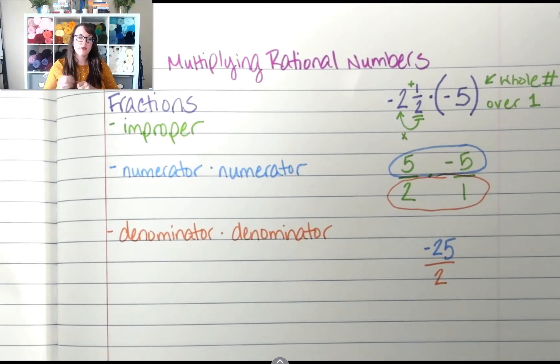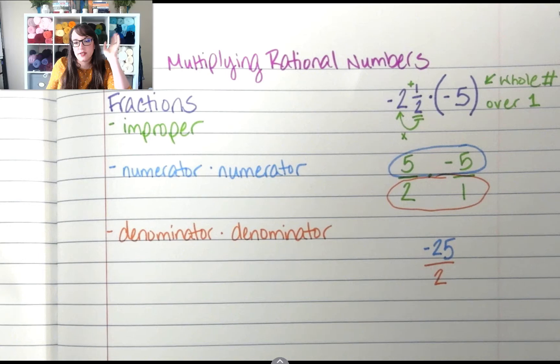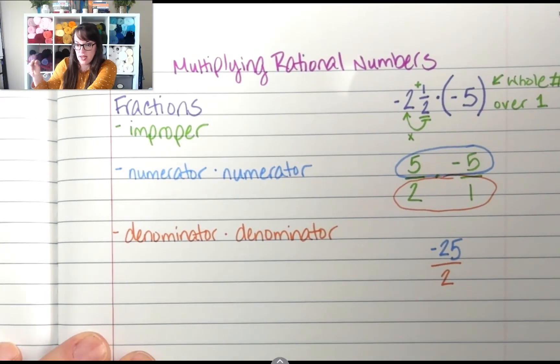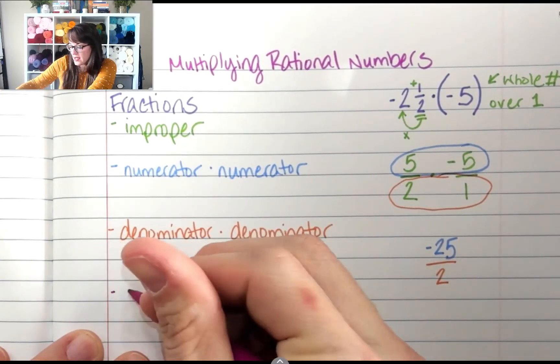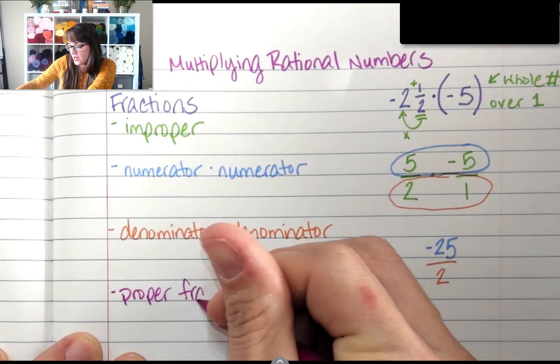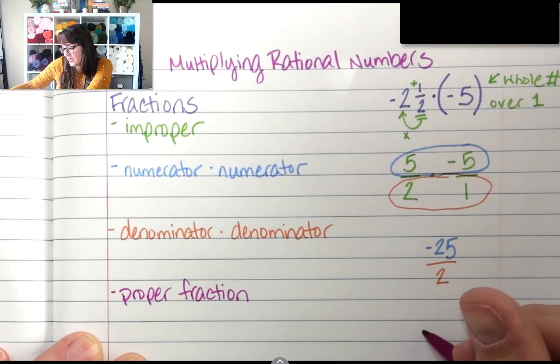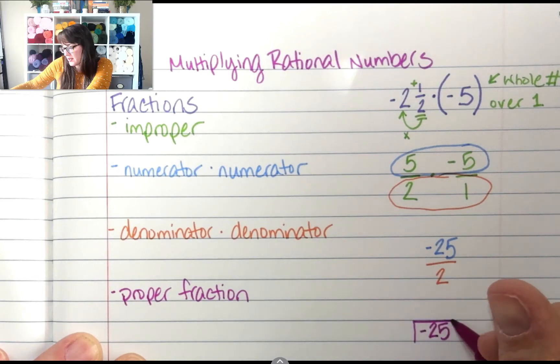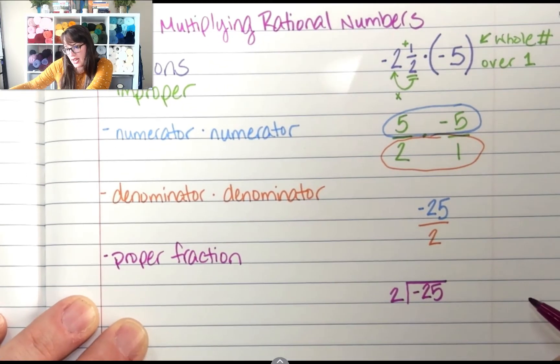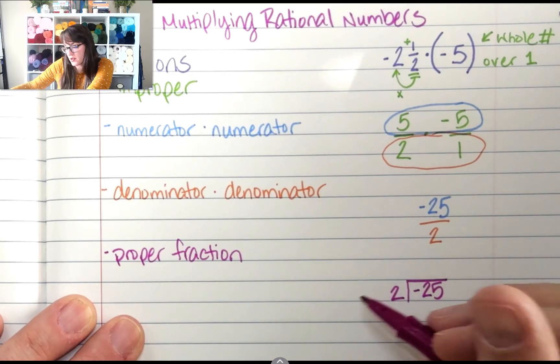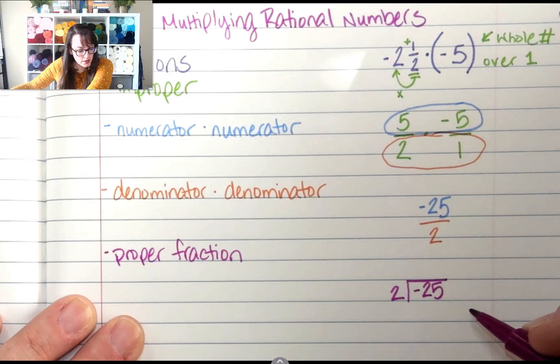Now, before I'm finished, the absolute last thing I need to do, I have to write my answer as a proper fraction. If the question is written in fraction form, we want the answer to be written in fraction form. So we're going to use division to make this a mixed number. So the last thing I need to do is write it as a proper fraction. So over here, I've got negative 25. And then on the outside, I have 2.